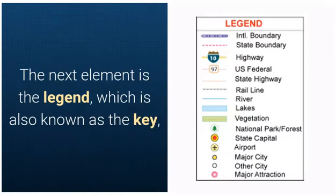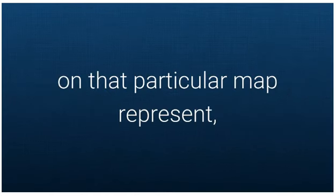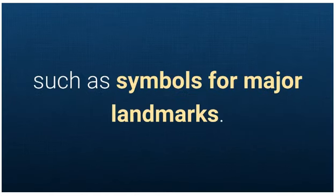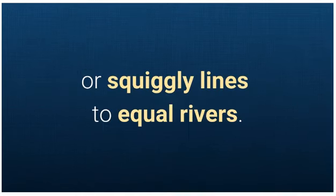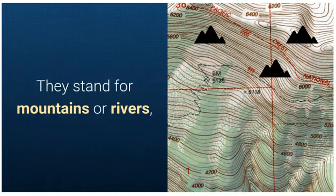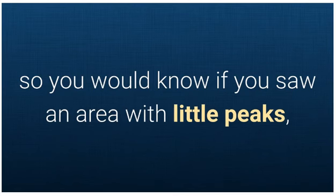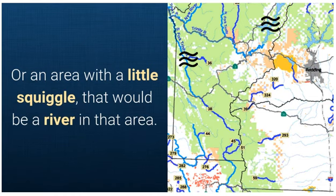The next element is the Legend, which is also known as the Key, and that explains what symbols that are used on that particular map represent, such as symbols for major landmarks. You may see little peaks to equal mountains, or squiggly lines to equal rivers. Those would be symbols that you could find on the map. They stand for mountains or rivers, so you would know if you saw an area with little peaks, there would be mountains there, or an area with a little squiggle, that would be a river in that area.